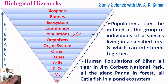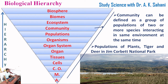The next level is population. Population can be defined as a group of individuals of a species living in a specified area that can interbreed together. Examples include the human population of Bihar, all tigers in Jim Corbett National Park, all giant pandas in a forest, and all Katla fish in a pond ecosystem.